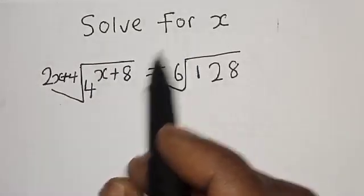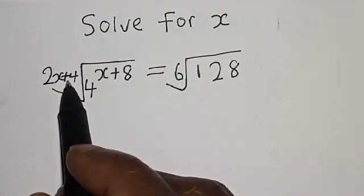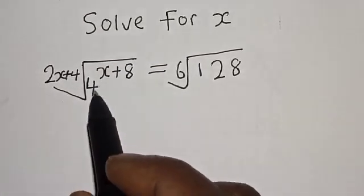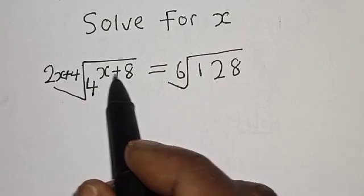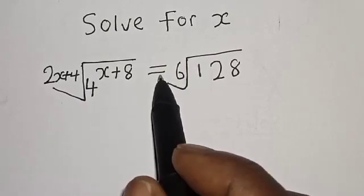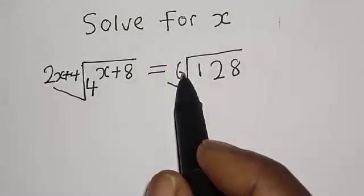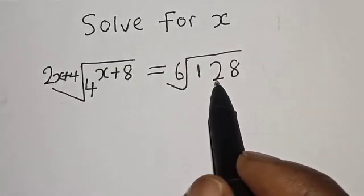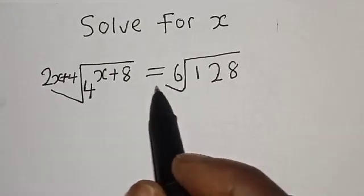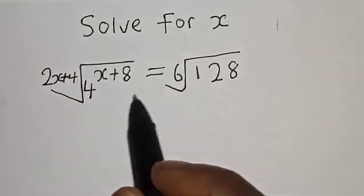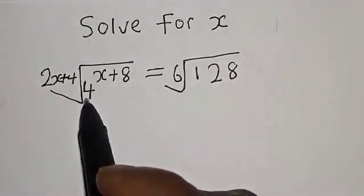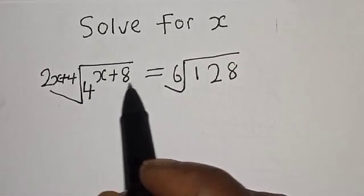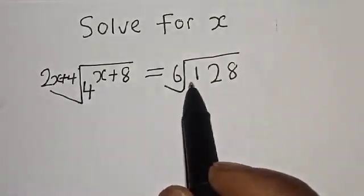For x, the (2x+4)th root of 4 raised to power x plus 8 is equal to the 6th root of 128. Hi everyone, welcome to my class. In this class, we want to find the value of x from this given equation.